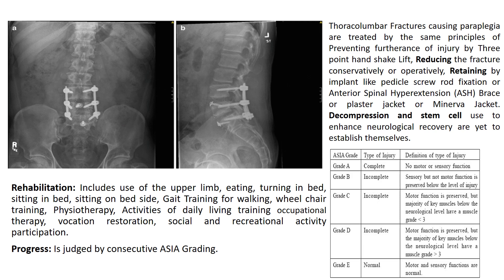Thoracolumbar fractures causing paraplegia are treated by the same principles: preventing further injury by three-point log-roll lift in the pre-hospital phase, then reducing the fracture conservatively or operatively, and retaining the reduction by implants such as pedicle screw-rod fixation, anterior spinal hyperextension brace, plaster jacket, or Minerva jacket. Non-operative decompression and stem cell use to enhance neurological recovery are still in the experimental stage.